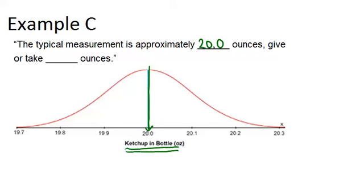And give or take what? So we want to figure out the standard deviation so we know the spread of this data. And I can see that the next tick mark is over here at 20.1 and down here at 19.9. So this data is not spread very much.